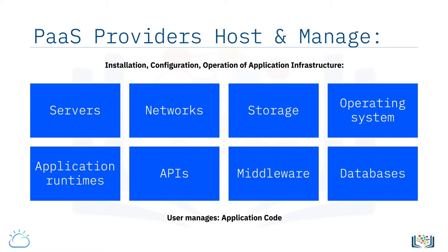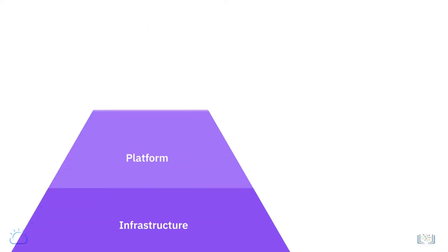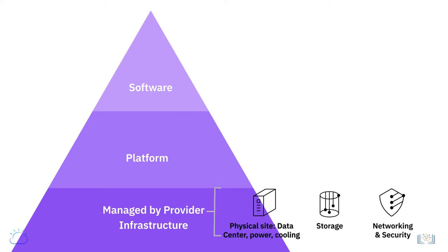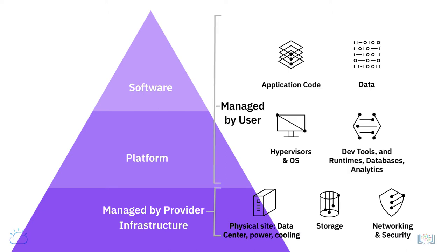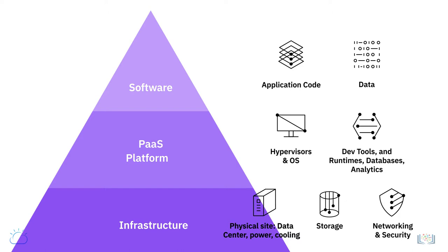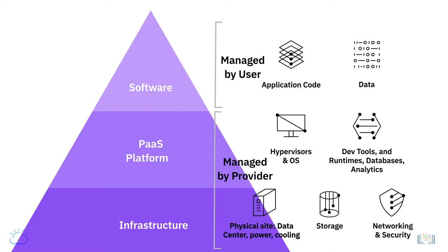Customers pay for this service on a usage basis and purchase resources on demand. With IaaS, the cloud provider offers access to raw computing resources such as servers, storage, and networking, while the user is responsible for the platform and application software. With PaaS, the cloud service provider delivers and manages the entire platform infrastructure, abstracting users from the lower-level details of the environment.